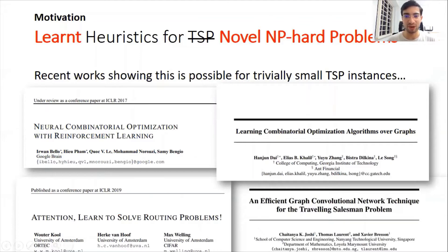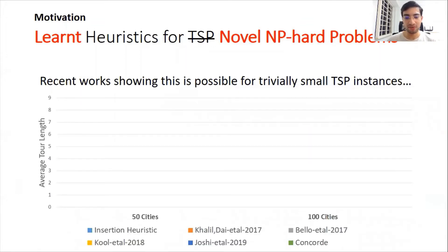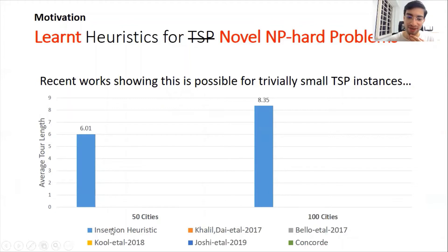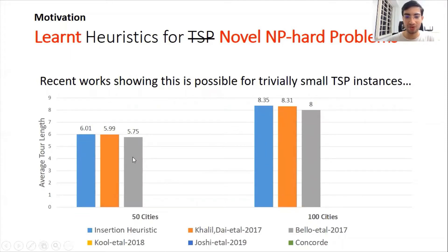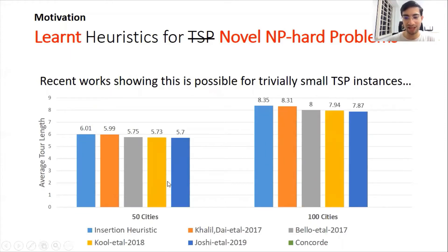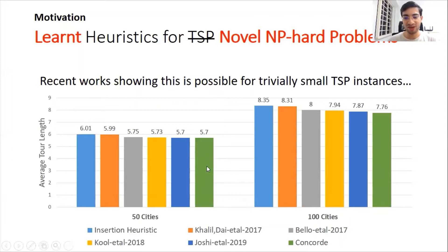There have been many recent works showing the possibility of doing this for trivially small TSP. Many of these papers have been published at top conferences, and my own bachelor's thesis was also on this topic. I believe these are really proofs of concept — they are evaluated on fixed TSP sizes, training and testing on TSP of 50 or 100 cities, and measuring the average tour length. Over the years these models have been getting better and better, with every publication producing better architectures for TSP. In fact, we are now very close to Concorde.